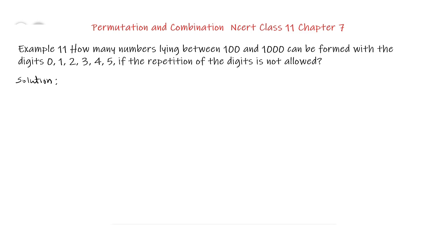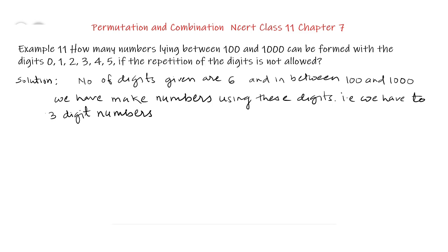So we solve like this. The total digits given to us are 6: 0, 1, 2, 3, 4, 5. And in between 100 and 1000, we have to make numbers using these digits. That is, we have to make 3 digit numbers. As in between 100 and 1000, all the numbers are of 3 digits.